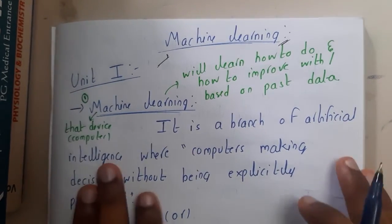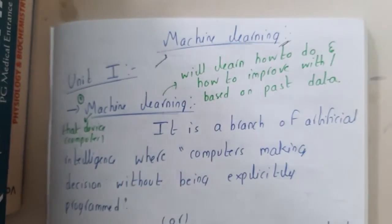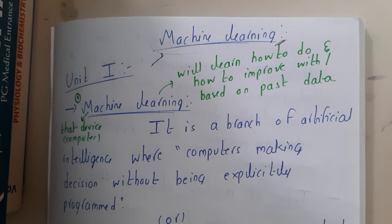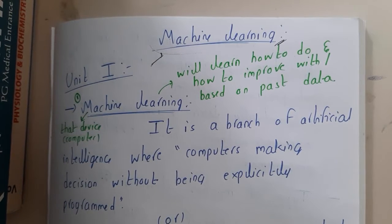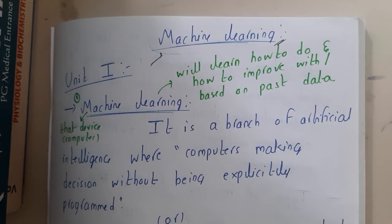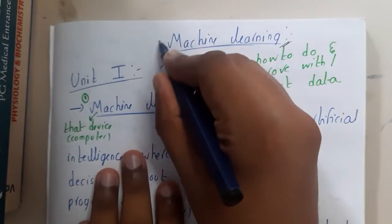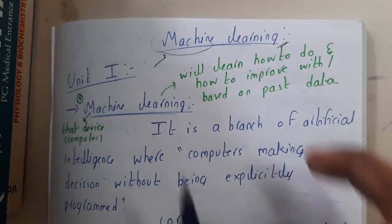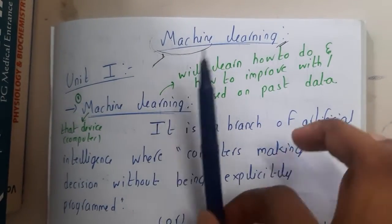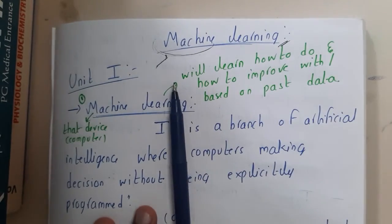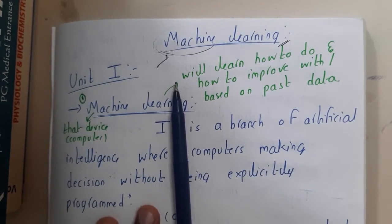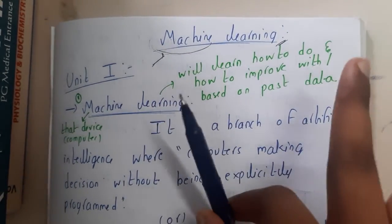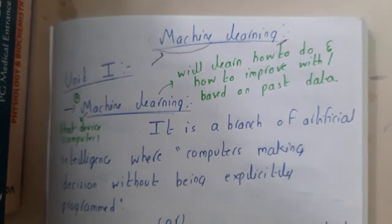Before going into any subject, we always start with the word name itself. So let us understand what machine learning basically means. Let us break it into two parts. What is a machine? A machine is a device or something which does some work — it might use electricity to do the work, and it gives you some output. That's the main thing — we call it a machine.